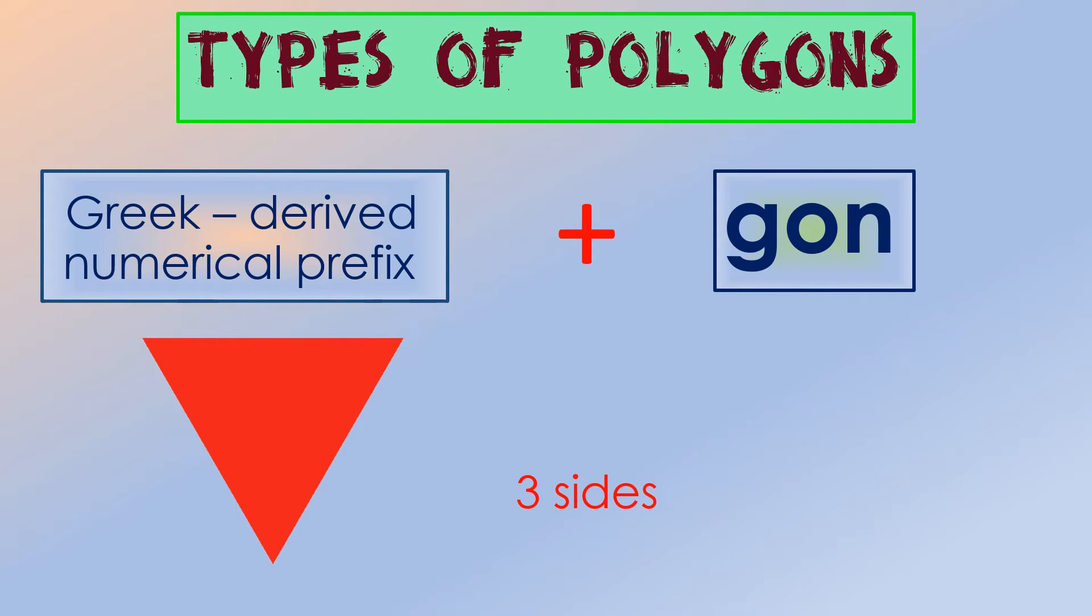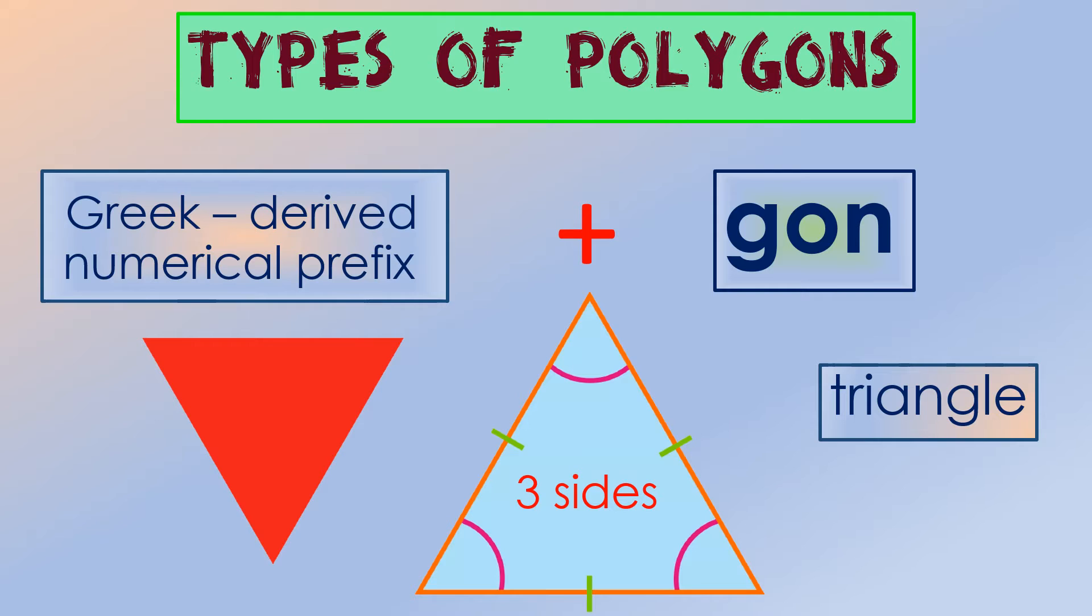The given figure has three sides and three angles, commonly known as a triangle. Because of its three sides, a triangle is also called a trigon.